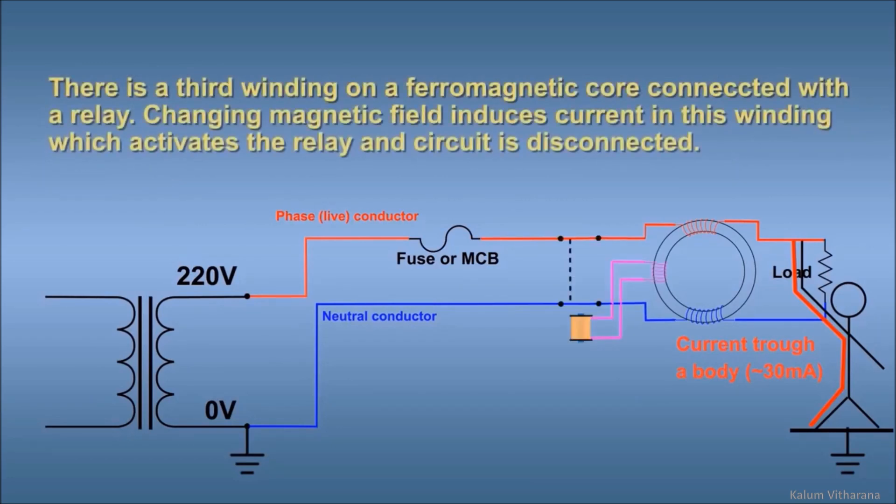There is a third winding on the ferromagnetic core connected to a relay. The changing magnetic field induces current in this winding which activates the relay, and the circuit is disconnected.